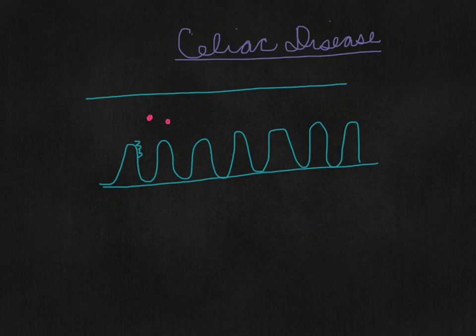Because of its structure, gluten is pretty resistant to digestion. It forms the glue of many different food products. It actually makes it down through the villi into a layer called the lamina propria.